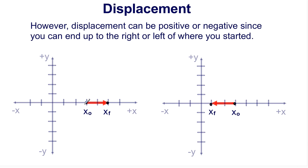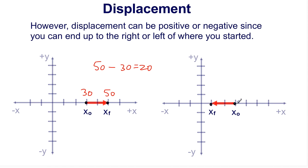Here are two more number line examples. Starting at 30 and ending at 50: displacement equals 50 minus 30, which is positive 20 — you moved 20 spaces to the right. Starting at 30 and ending at 10: displacement equals 10 minus 30, which is negative 20 — you moved 20 spaces to the left. So the sign tells you the direction.